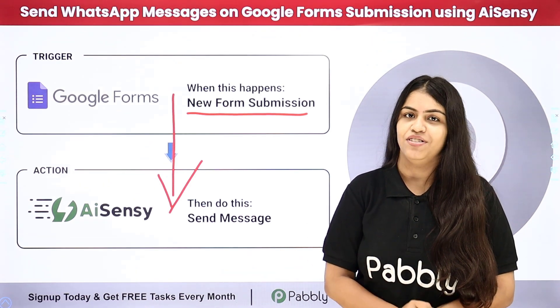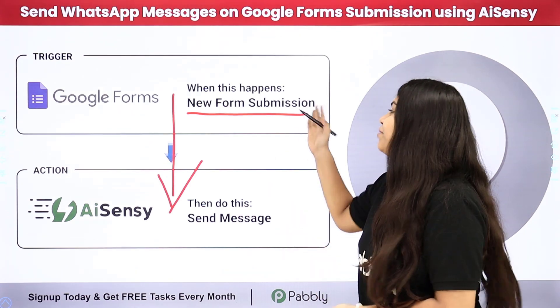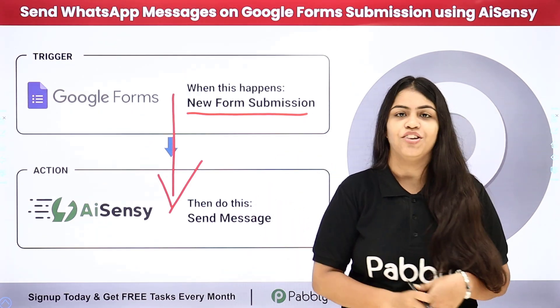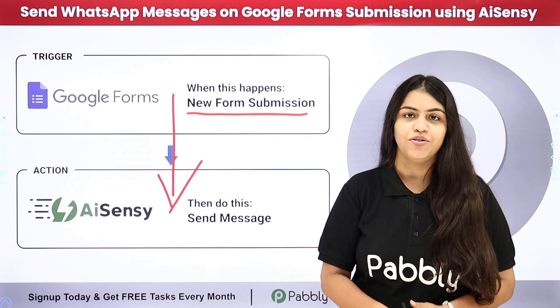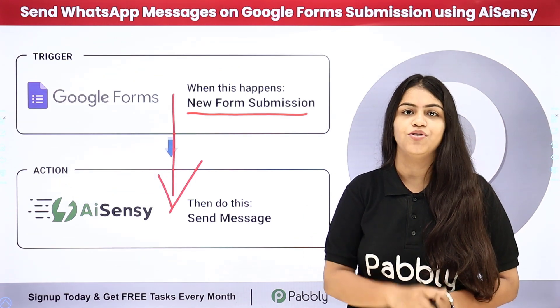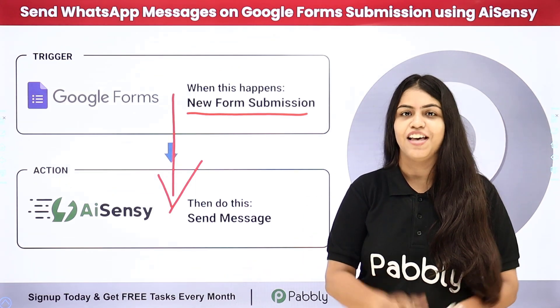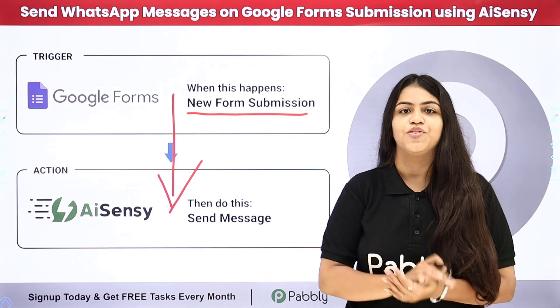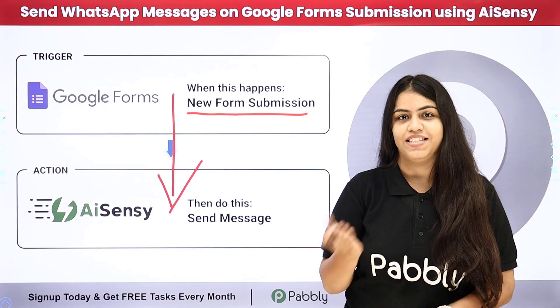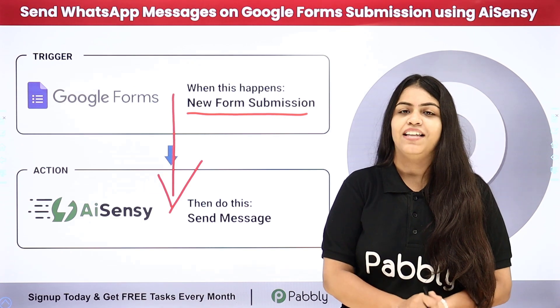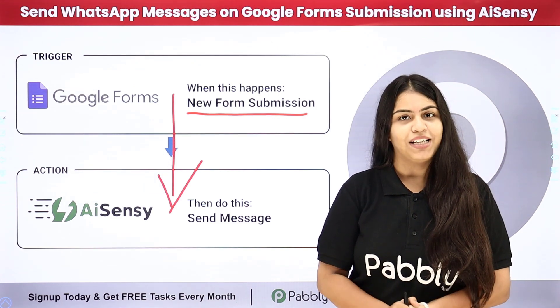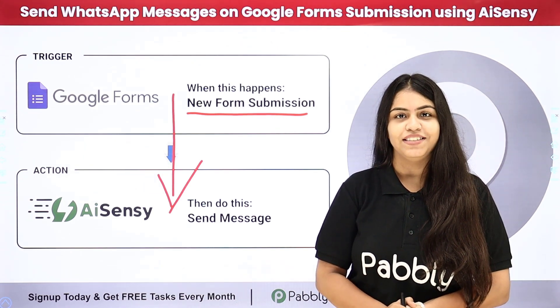To do this, we are going to create a connection between Google Forms and AiSensy. To create this connection without knowing any programming or coding language, we are going to use Pabbly Connect. It is an amazing automation software. I am going to create this connection because I want to reduce the no-shows of my events.